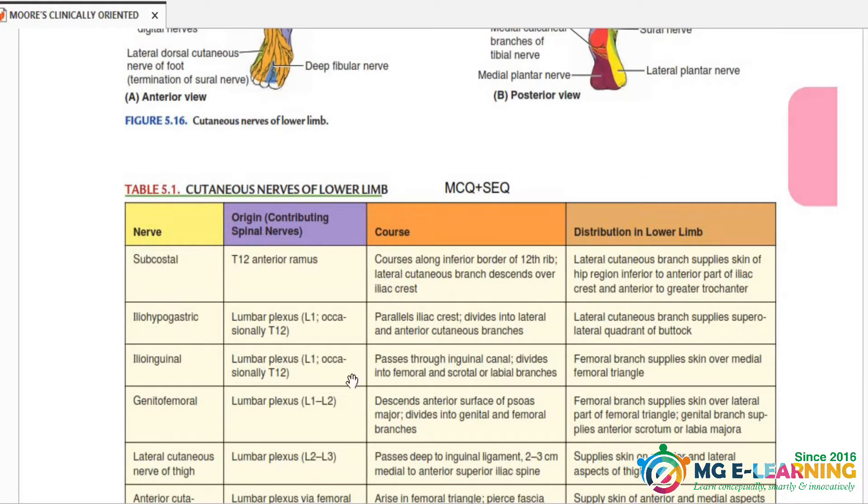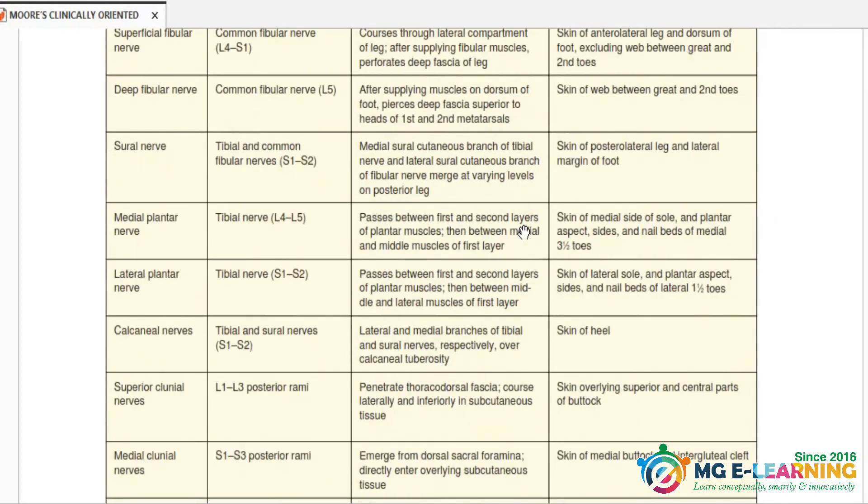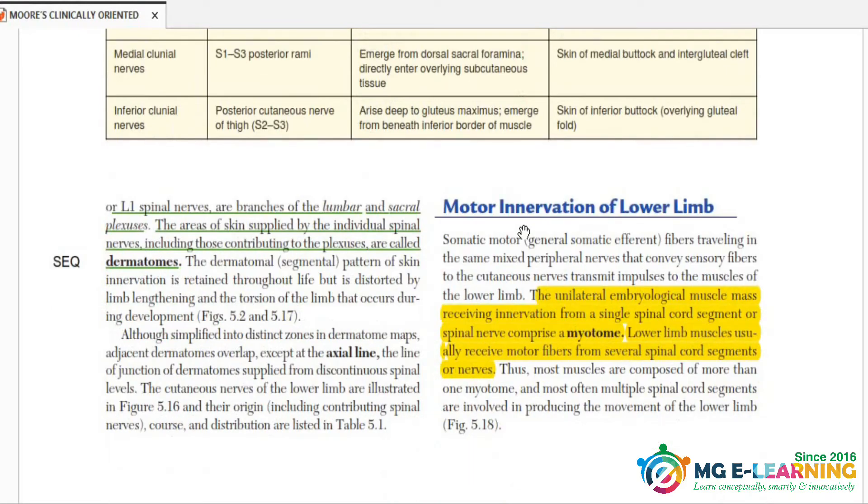And again, this table is very important for MCQ and SQ point of view to see all the nerves of lower limb and their courses and distribution. Now you have to know about dermatomes, definition of dermatomes.